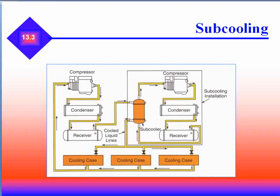This is an example of a subcooled system. Notice the first compressor takes care of the refrigerator directly, and then we have a second subcooling installation — that's the subcooler. It's a heat exchanger that handles the liquid lines.